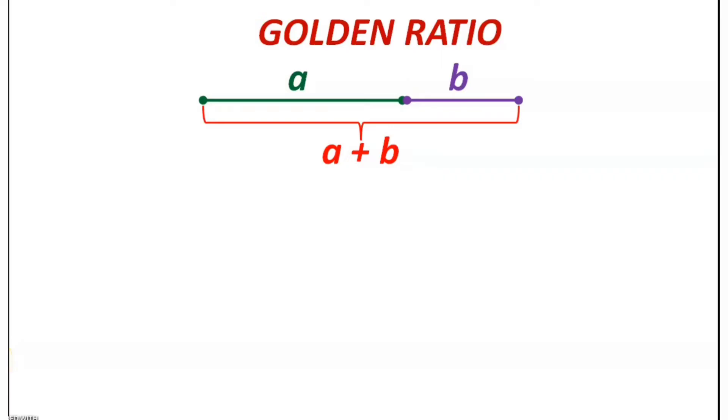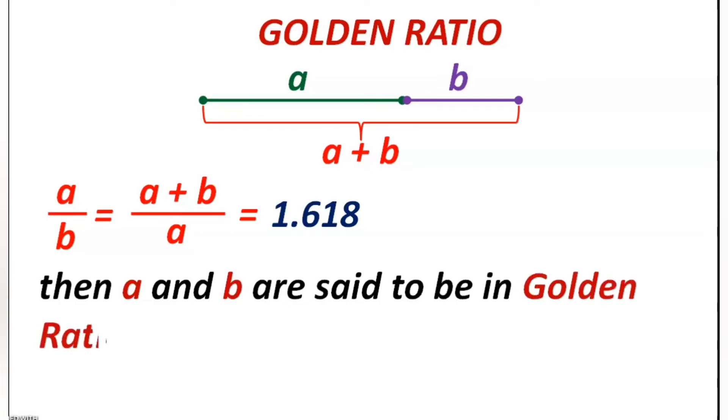Hello everyone, in our previous video we have learned what is a golden ratio. If two numbers are in such a way that a by b is equal to a plus b by a, in which both are equal to 1.618, then a and b are said to be in golden ratio.